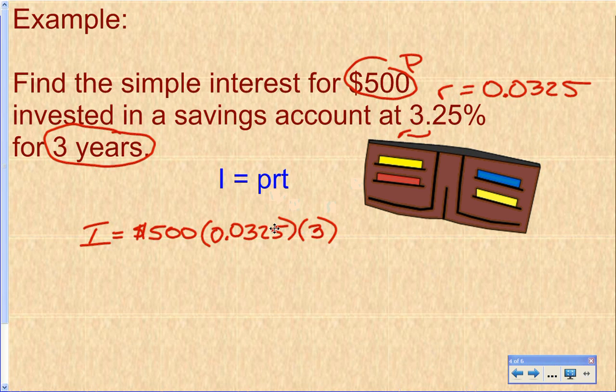The most common mistake with these problems is people plugging in 3.25% in here, instead of plugging in the decimal. So just be aware of that, and watch for that. So let's punch this in a calculator real quick. So we got 500 times 0.0325 times three. And I get that the interest is $48.75. So that's how much the bank is paying you for having your money in the bank.